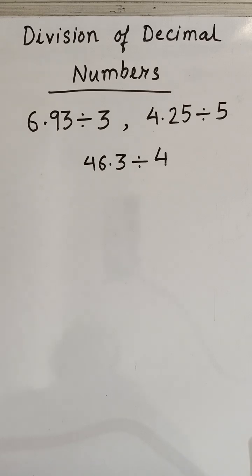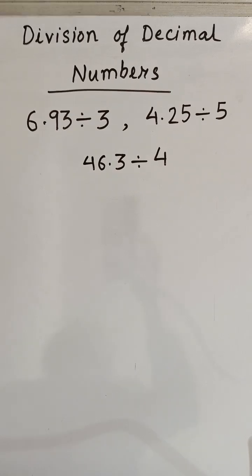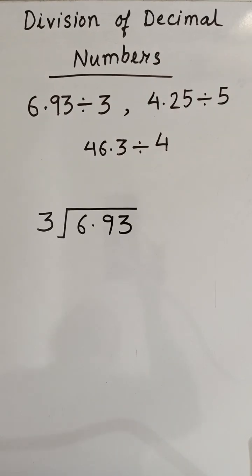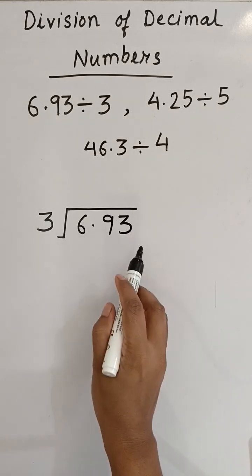Hello everyone, welcome back to my channel. Today we will learn division of decimal numbers. I have given three division sums and all three are different from each other, so to understand better we have to watch the video till the end. Now let us start with the first sum: 6.93 divided by 3.